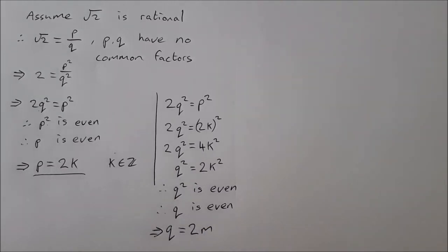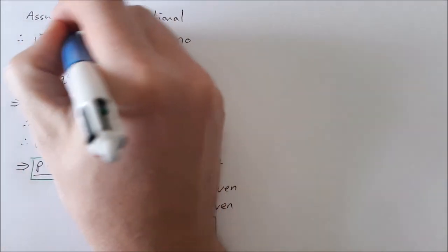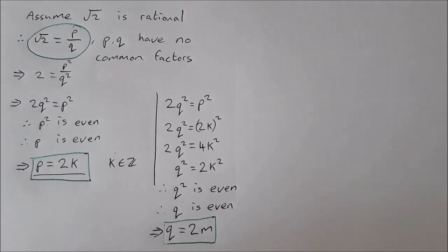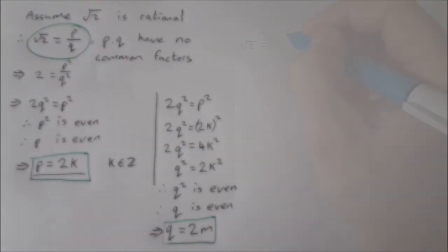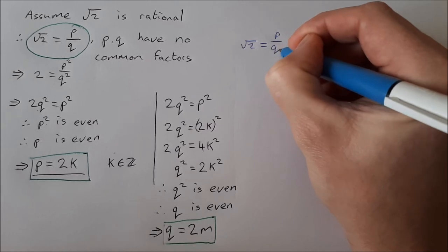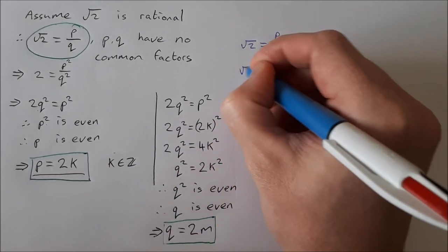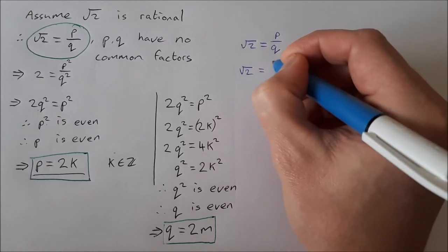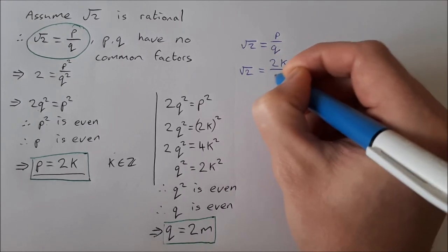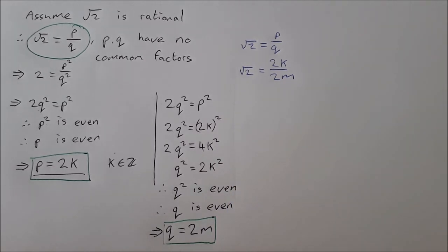Now if we take these two things here, so q is equal to 2m, p is equal to 2k, and we put them back into this, let's see what happens. So square root of 2 is equal to p over q. Now p is 2k and q is 2m.